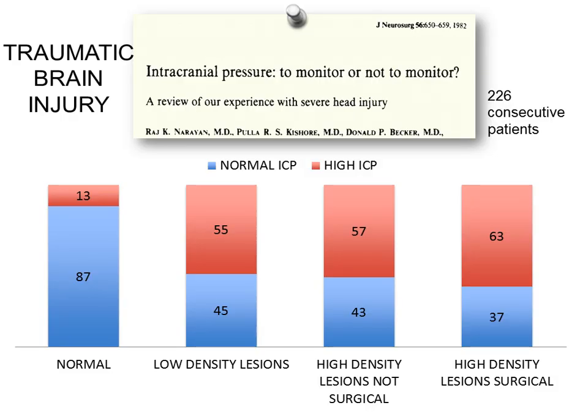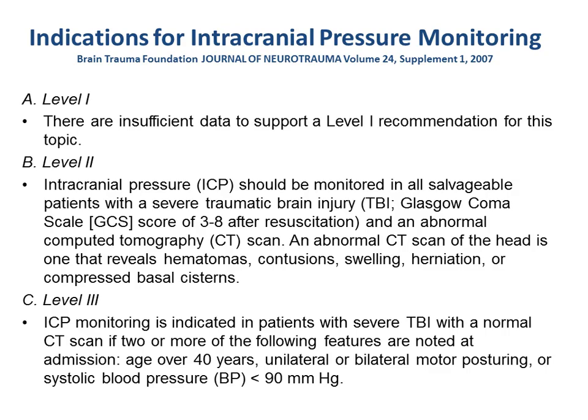And if you look at the evidence we have in traumatic brain injury, even if we started studying it many years ago, we don't have strong evidence about changes in volume and intracranial pressure. This is a very old seminal paper published in 1982 that says if you don't have any mass lesion, the probability of having IICP is low.